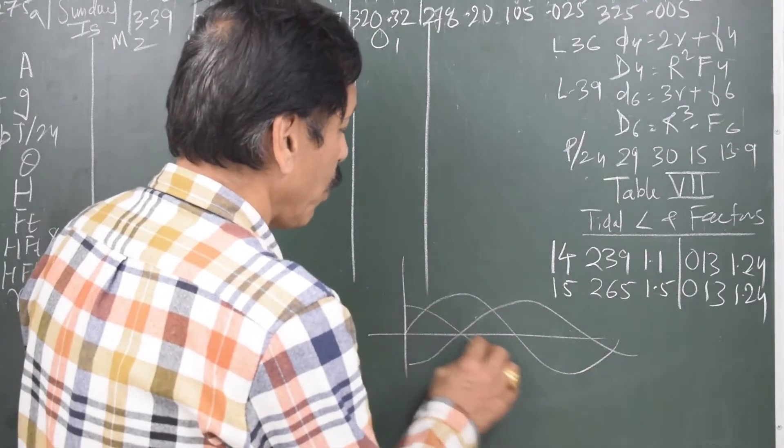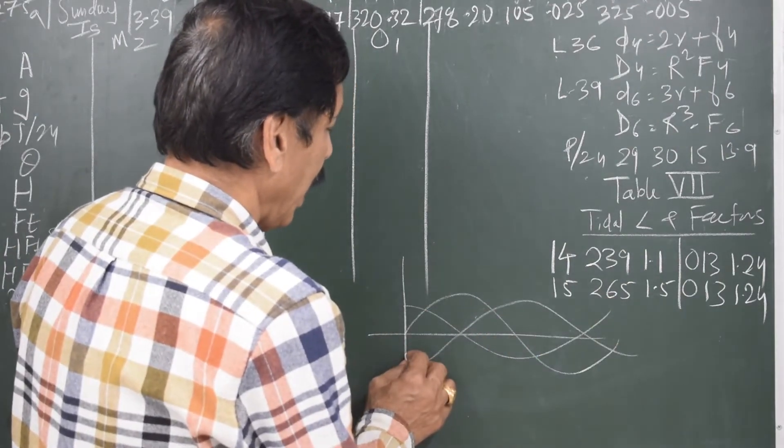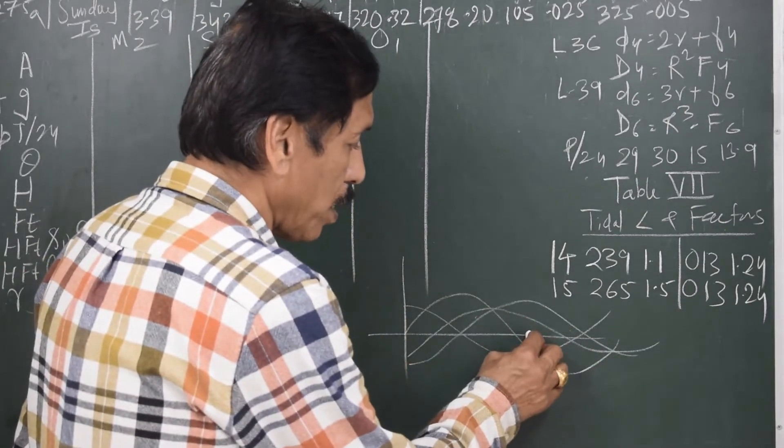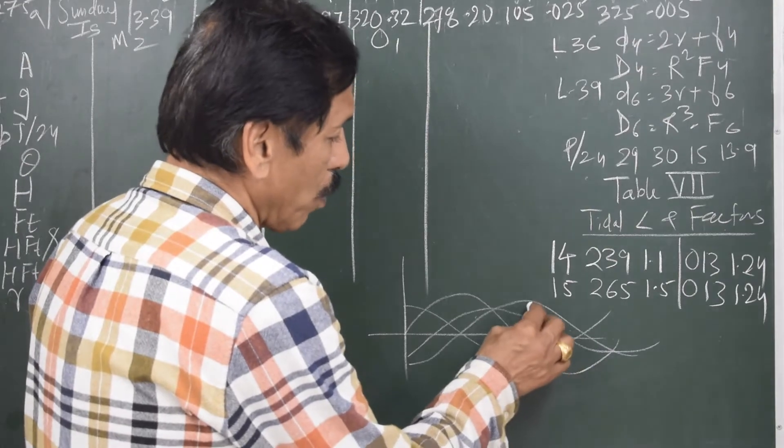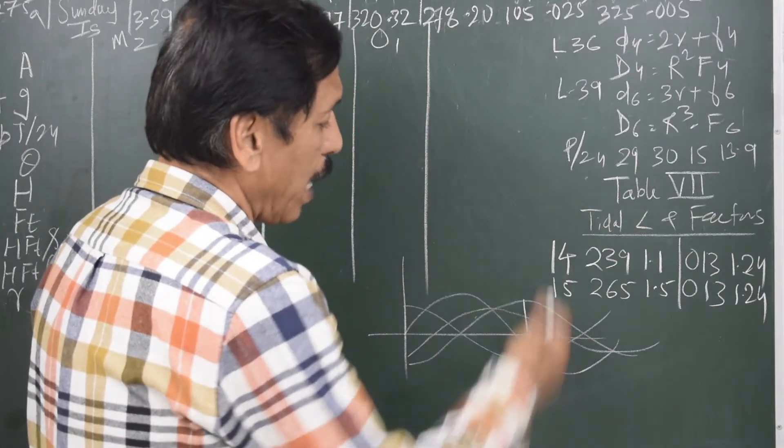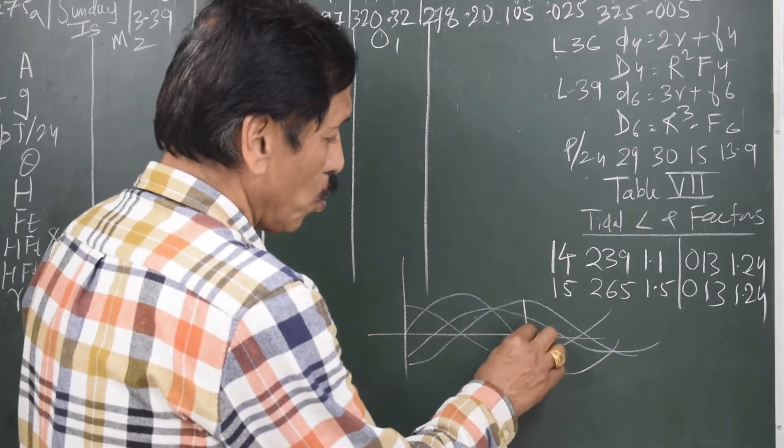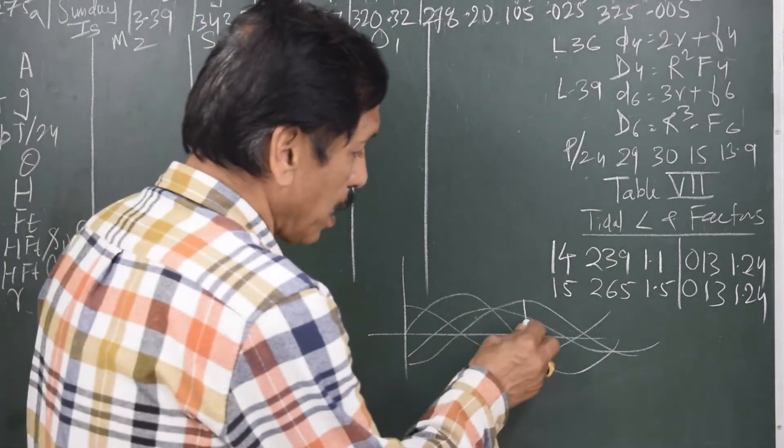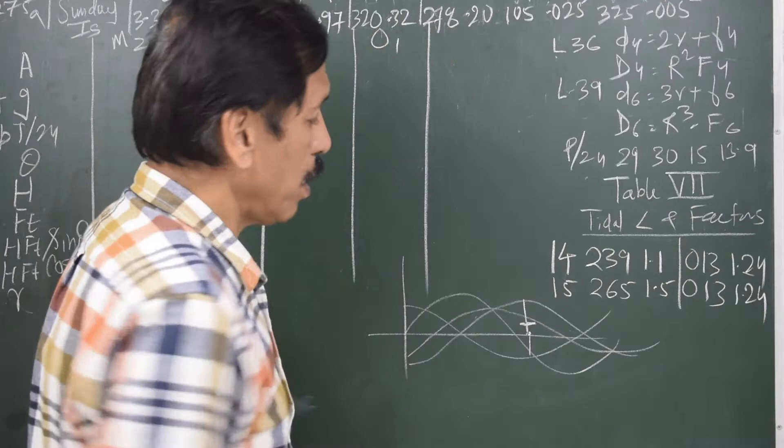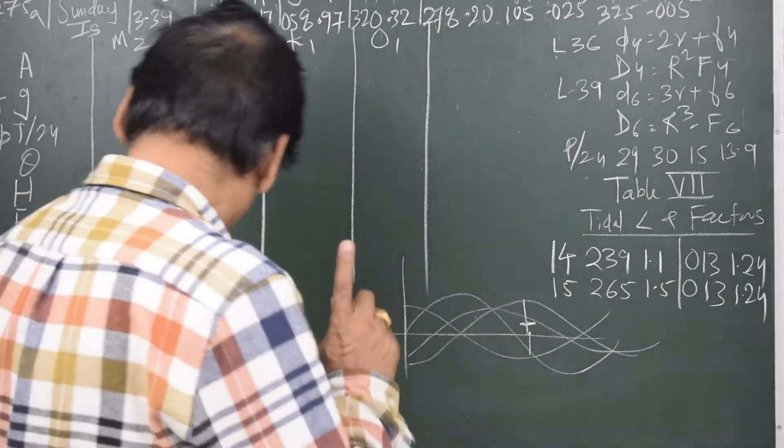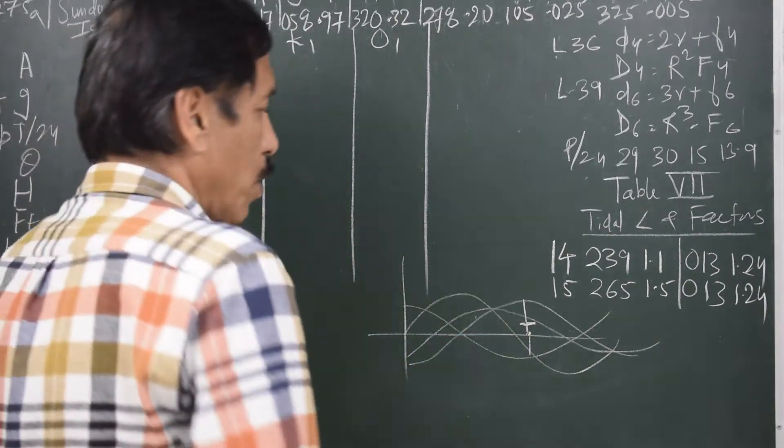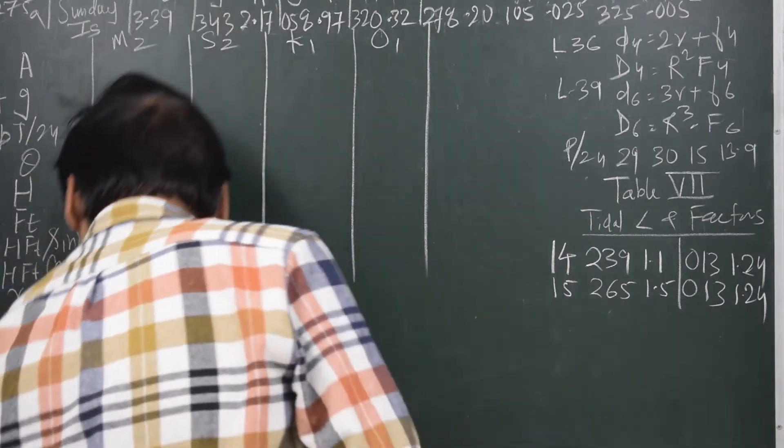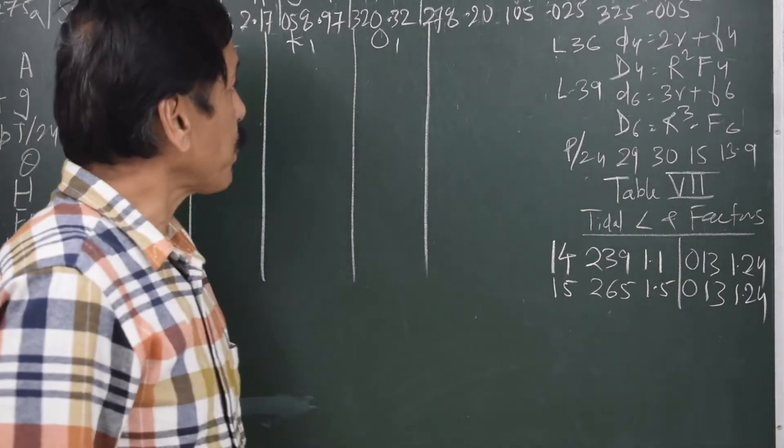What we do is we algebraically add these. For example, if I want to find out height of tide, this particular component and this component add on the positive side, whereas these two components are on the negative side, and the net resultant height of tide at this instant might be here. We are not going to draw the curves but we are going to mathematically or trigonometrically and algebraically add all of them.